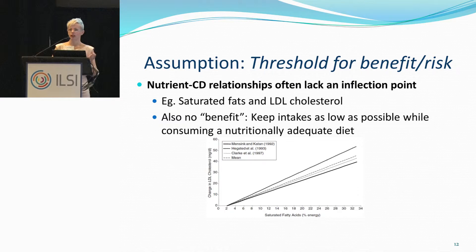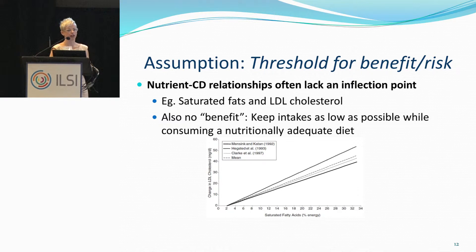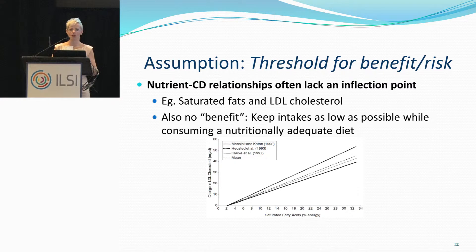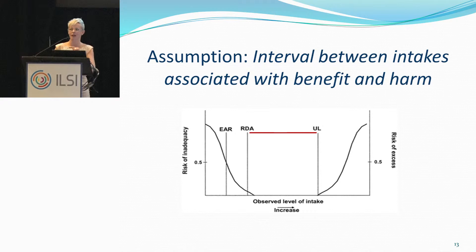However, that doesn't always hold true when looking at chronic disease endpoints. They often either lack an inflection point, or the inflection point is within some range not attainable through a normal healthy diet. The example here is the relationship between intake of saturated fats and LDL cholesterol, used as a surrogate marker for cardiovascular disease. At any level of saturated fat intake, you have a linear relationship with LDL cholesterol, so your risk increases in a linear fashion. Saturated fats, although we all consume them and they are rather delicious, have no benefit — the recommendation was that intake should be as low as possible while maintaining adequate intakes of all other essential nutrients. That's where some of the creativity Linda was talking about came in.